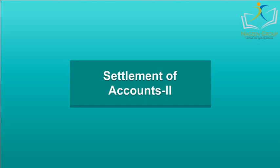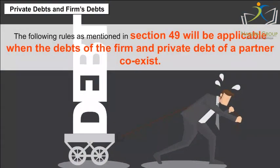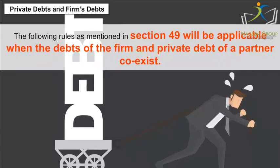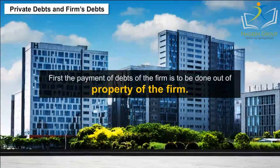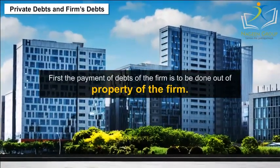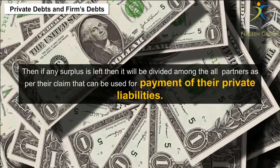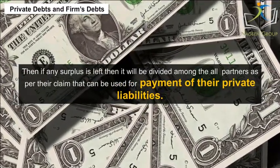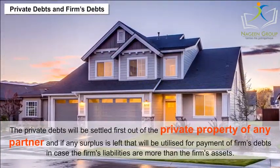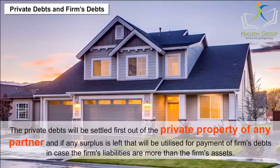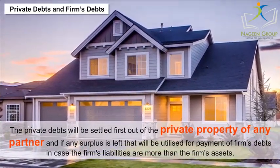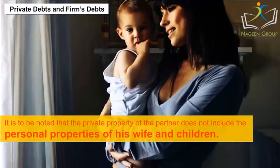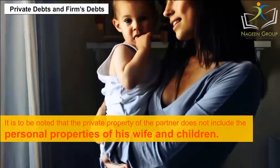Settlement of Accounts — Private Debts and Firm Debts: The following rules as mentioned in Section 49 apply when the debts of the firm and private debt of a partner coexist. First, the payment of firm's debts is done out of the property of the firm. If any surplus is left, it will be divided among all partners as per their claim for payment of their private liabilities. The private debts will be settled first out of the private property of the partner, and if any surplus is left, it will be utilized for payment of firm's debts.